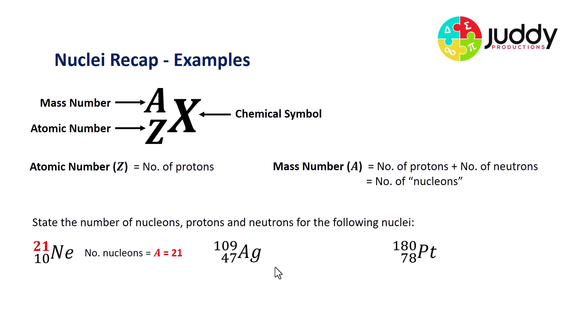So first of all, the number of nucleons is equal to the mass number, and in this case, we've highlighted 21 in red. So the mass number for this particular isotope of neon is 21. The number of protons is equal to the atomic number Z, which in this case is colored green, is 10. And the number of neutrons can be calculated from subtracting the atomic number from the mass number. So we're subtracting 10 from 21, and leaves us with 11 neutrons.